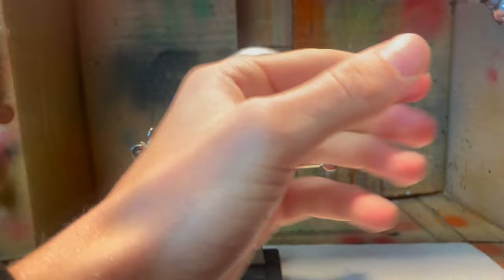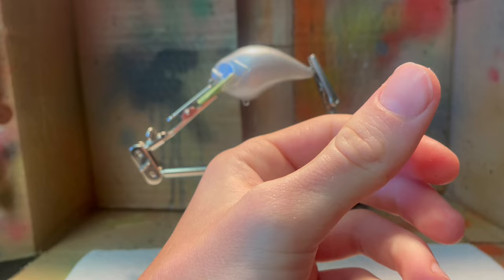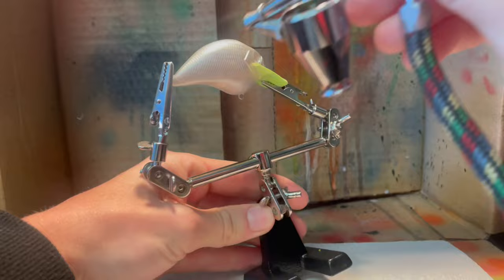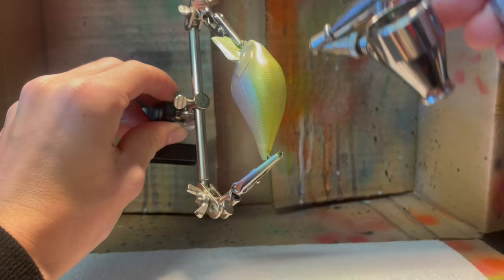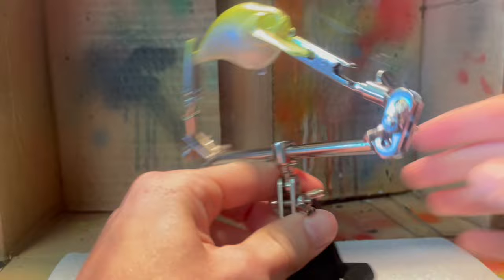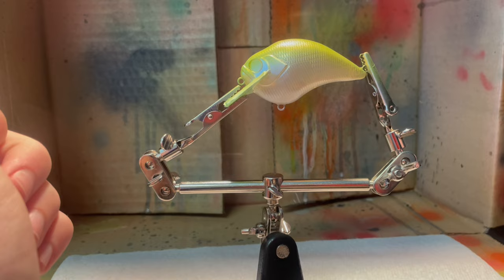We're just going to hit it up here. I'm going to turn my paint down on my gun quite a bit because I don't want it going everywhere. I'm thinking that looks pretty good. We'll probably heat set it and then move on to our next color, which will be black.